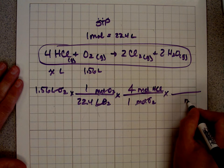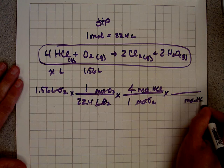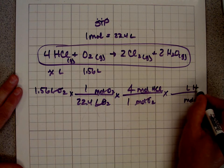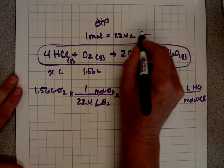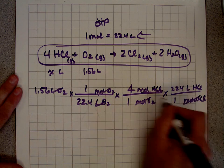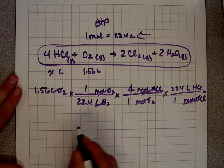And now, I want to convert moles of HCl into liters of HCl. And I'm going to use this relationship again. One mole is 22.4 liters. Now, let's make sure everything cancels out. I'm left with liters of hydrochloric acid.